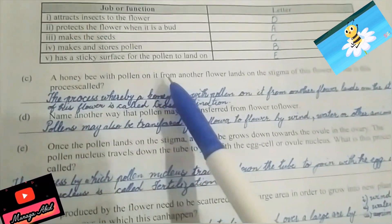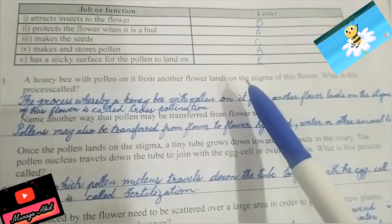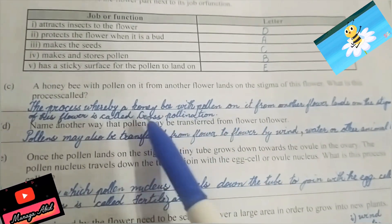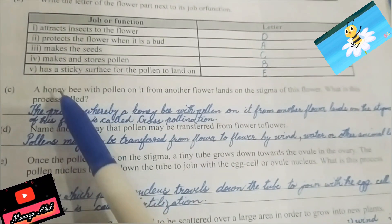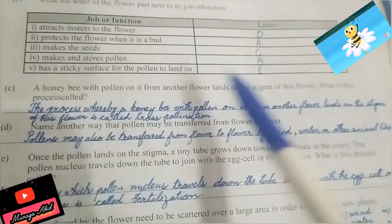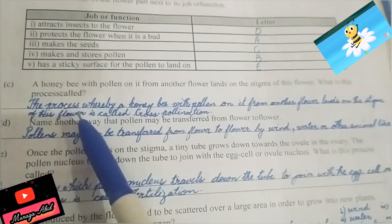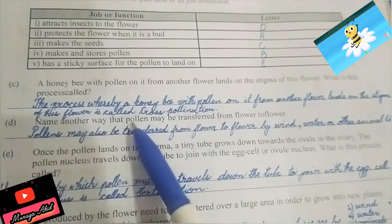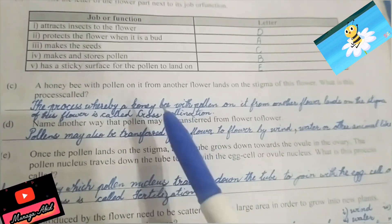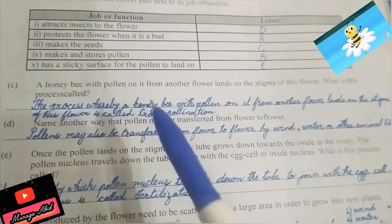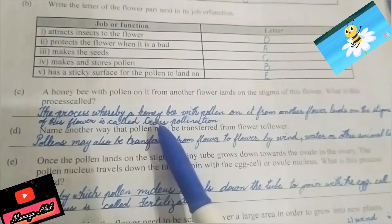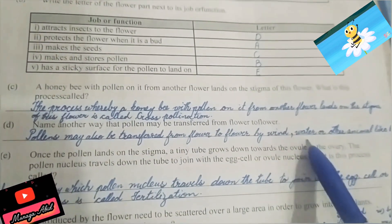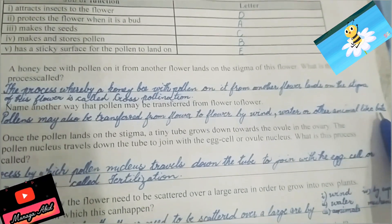Part A: a honey bee with pollen on its form lands on the stigma of another flower. This process is called cross pollination. You can write just 'cross pollination' or make it a full sentence. Part D: name another way that pollen may be transferred from flower to flower. Other than honey bees, pollen can also be transferred by wind, water, or other animals like bats.